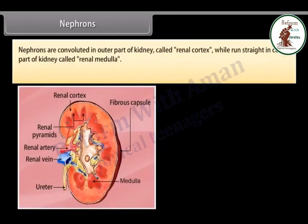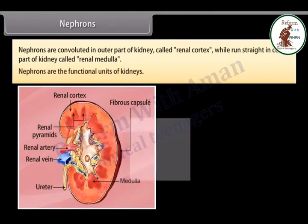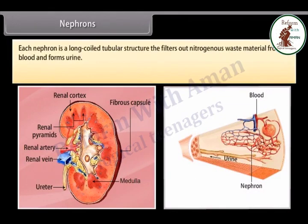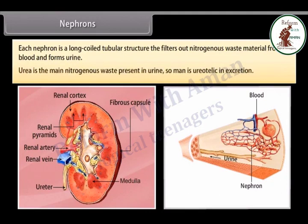Nephrons are convoluted in the outer part of the kidney called the renal cortex, while they run straight in the central part called the renal medulla. Nephrons are the functional units of kidneys. Each nephron is a long coiled tubular structure that filters out nitrogenous waste material from the blood and forms urine. Urea is the main nitrogenous waste present in urine, so man is ureotelic in excretion.